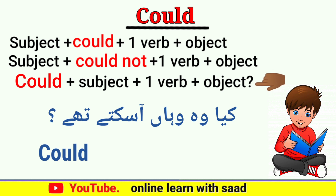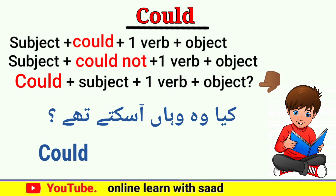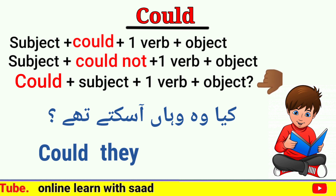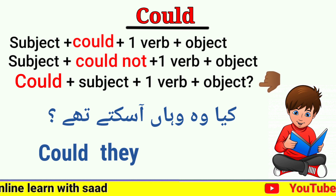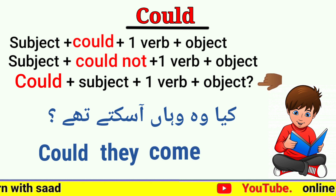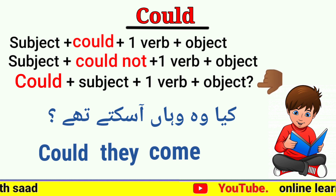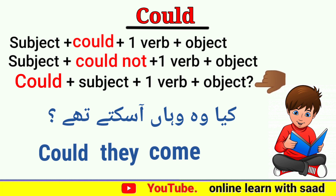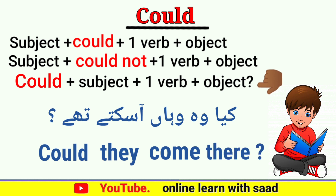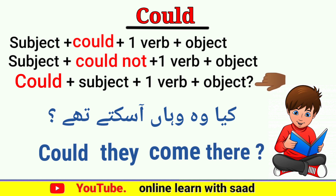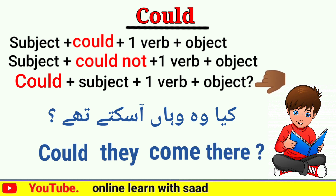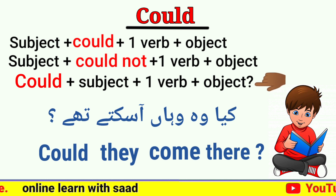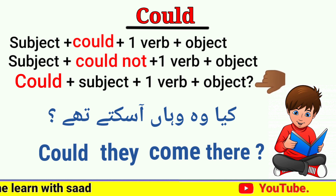'کیا وہ وہاں آ سکتے تھے؟' — پہلے could، پھر subject 'وہ' یعنی they، پھر verb 'آنا' یعنی come، پھر object 'وہاں' یعنی there، آخر میں question mark — Could they come there?